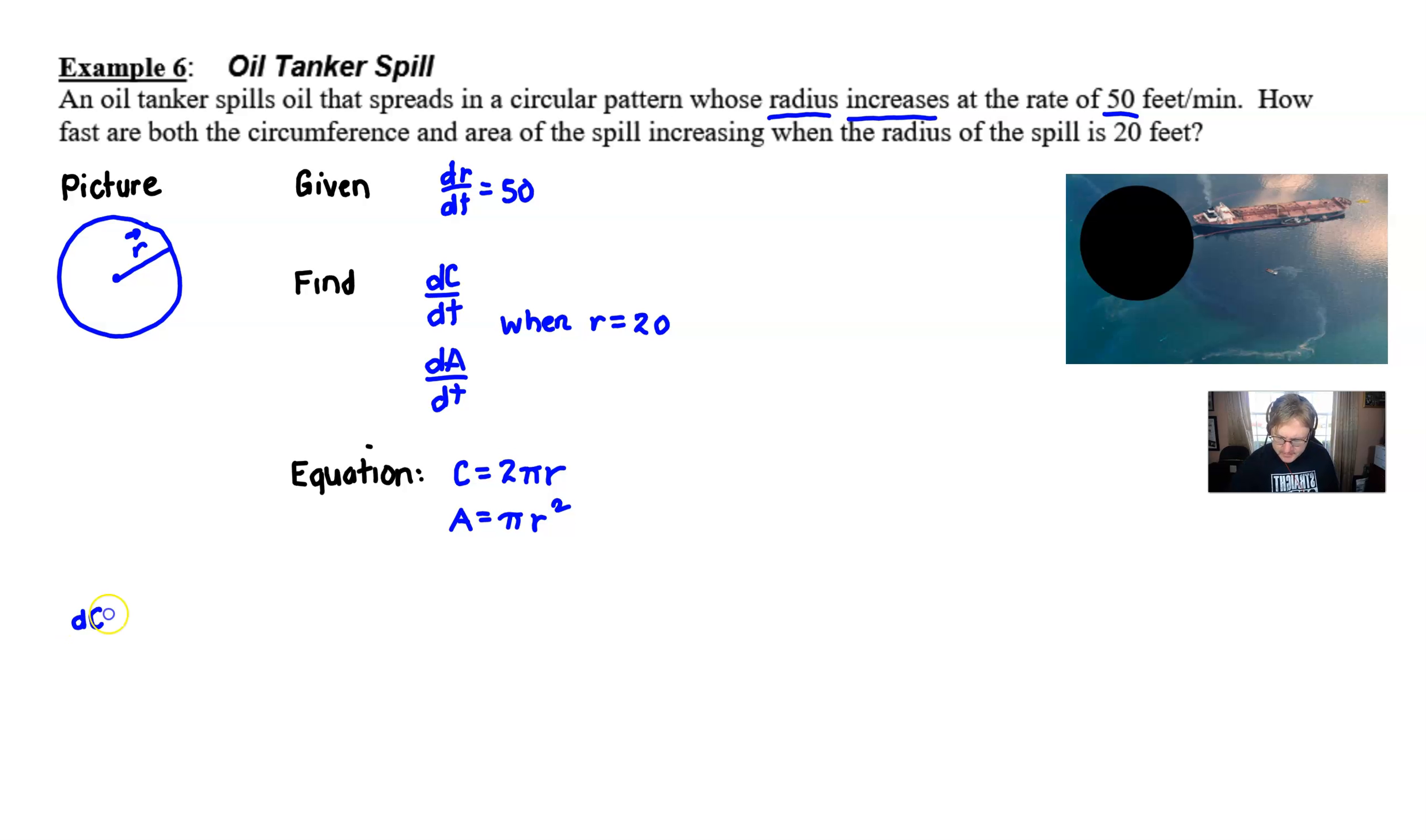So I'm going to do the circumference first. The derivative of circumference with respect to time is dC/dt, and then the derivative of 2πr with respect to time is 2π, but then you got to tack on your dr/dt. We're trying to find the rate of change of the circumference. So our dC/dt is what we're looking for, and all we need to do is plug in what we know about the dr/dt, which is 50 of course. And this will all become 100π.